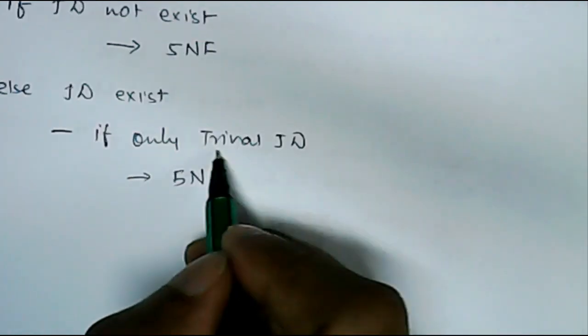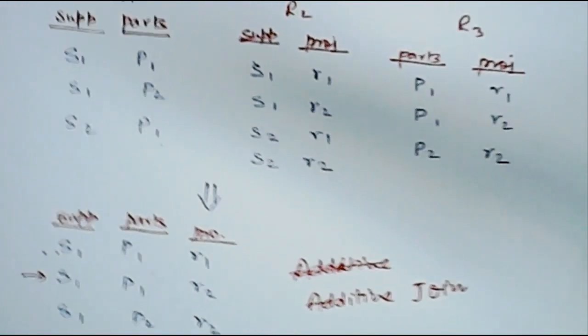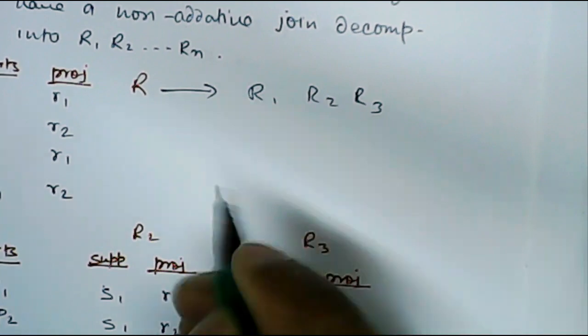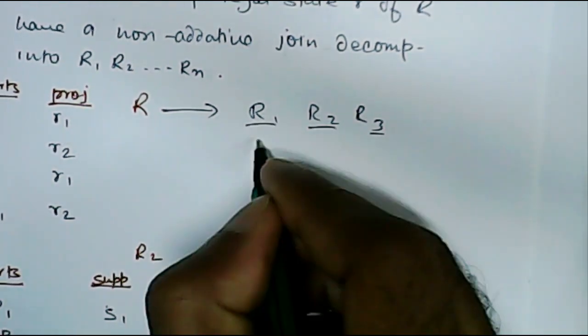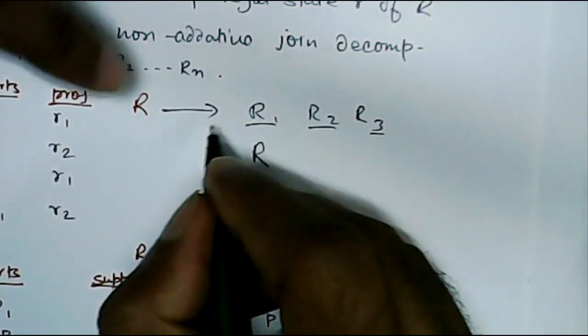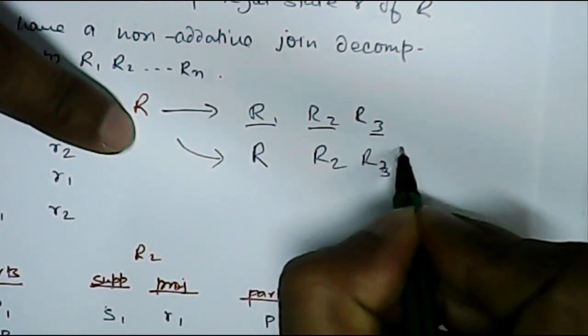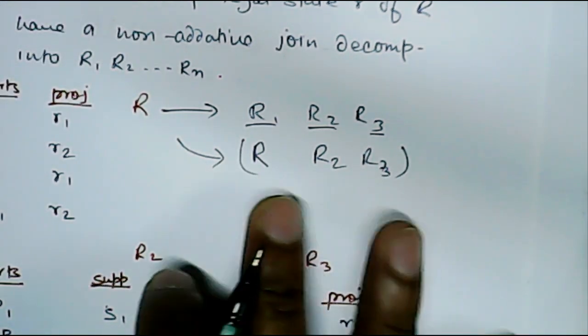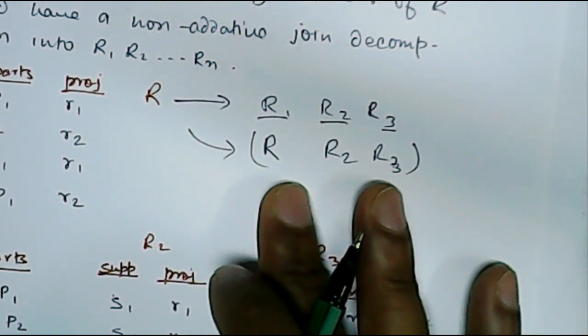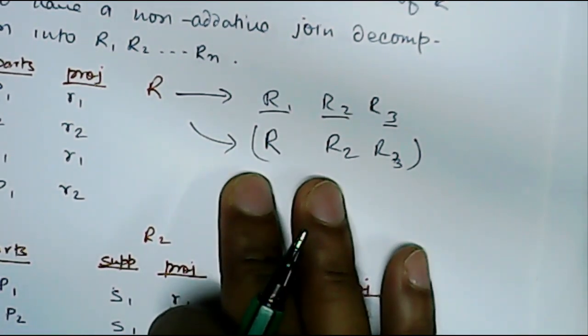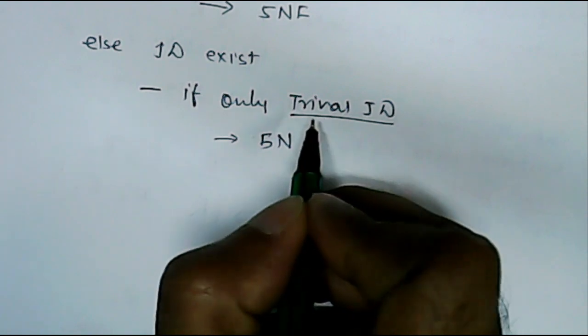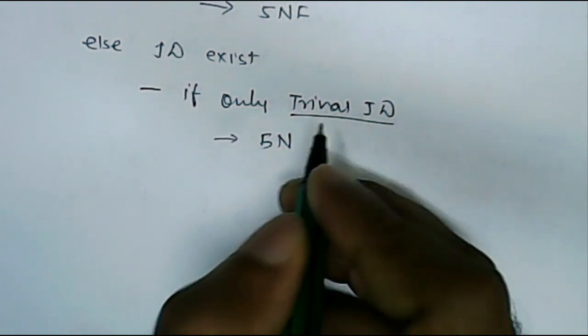What is trivial joint dependency? We have understood what is joint dependency. Let's say R is broken into R1, R2, R3. Now if one of this R1, R2, or R3 is R itself, then obviously there will not be any data loss or any additive join condition. So this is called trivial joint dependency. If it is trivial joint dependency, then there will be fifth normal form.